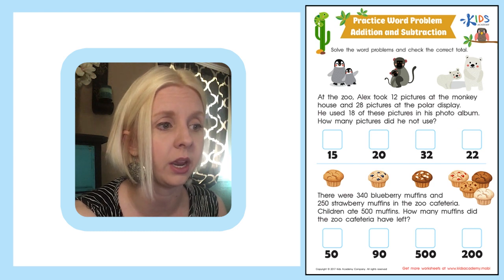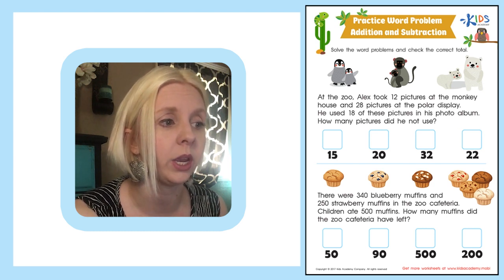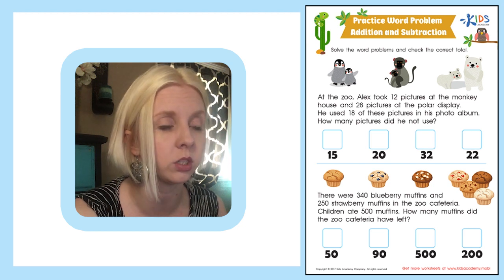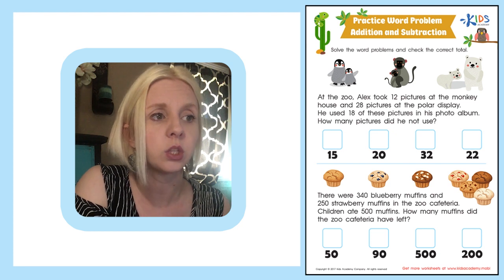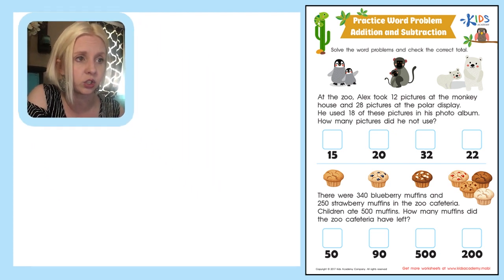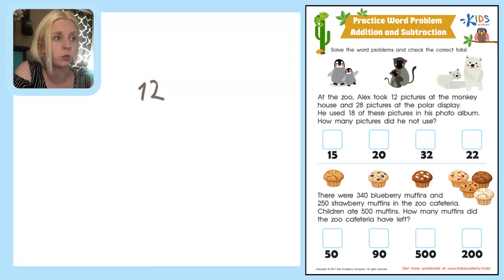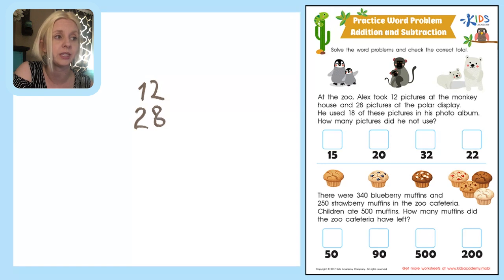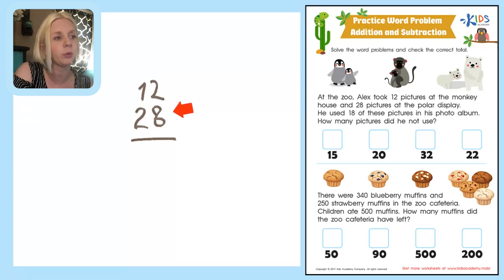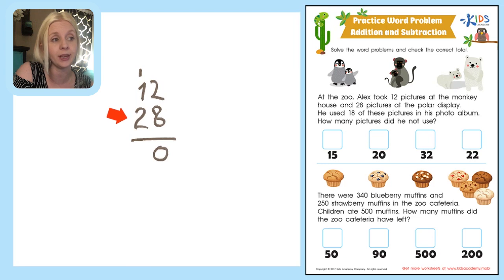Let's get started. We need to write out this problem off to the side. Alex took 12 pictures, so we start with 12, and he also took 28 pictures at the polar display. We need to add those two together to find how many pictures he took total. So 8 plus 2 is 10 — carry the 1. Then 1 plus 2 is 3, plus the carried 1 is 4. So altogether he took 40 pictures.